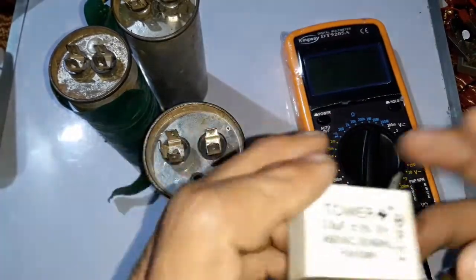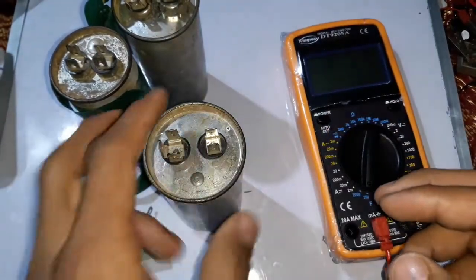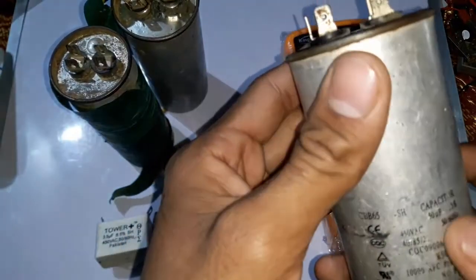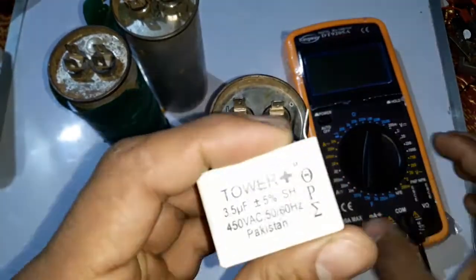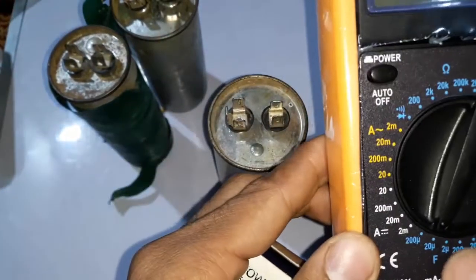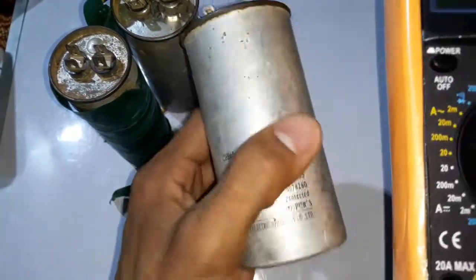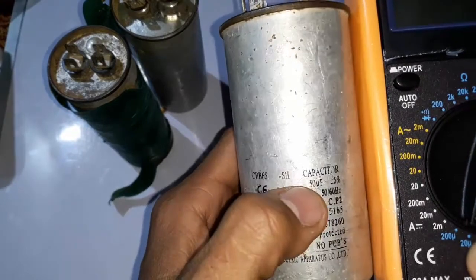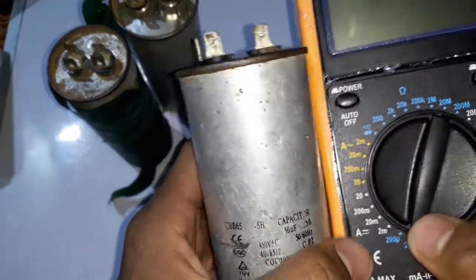Here are some capacitors. This capacitor is 3.5 microfarad and this one is 50 microfarad. So if I want to test this capacitor I will choose the 20 microfarad option. And if I want to test the 50 microfarad capacitor then I will choose the 200 microfarad option.